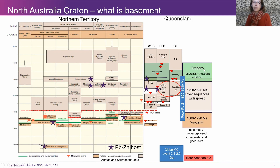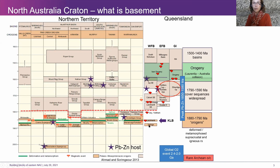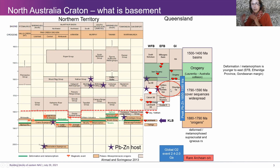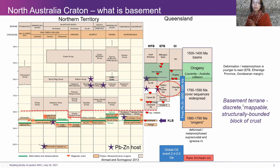Then we have deformation, the Isan Orogeny, collision with Laurentia, and those younger basins. When we think about what's exposed as basement in the Mount Isa area, it's dominantly the Kalkadoon–Leichhardt belt, which looks relatively insignificant but is obviously exposed over a large area. Then we've got Uringa and a few other Kuridala older gneisses and rocks. We're really focused on those older deformed and metamorphosed rocks, but recognizing that in the eastern fold belt and Georgetown, some of these younger units are deformed and metamorphosed. We're still keeping those in the cover sequence and really trying to work out those deeper fundamental basement blocks — discrete, mappable, structurally bounded blocks of crust.